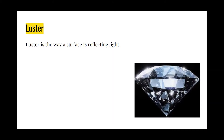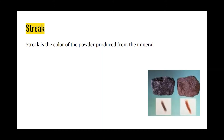Luster is the way a surface is reflecting light, and the picture shows an example of luster. Streak is the color of the powder produced from a mineral, and the picture shows an example of streak.